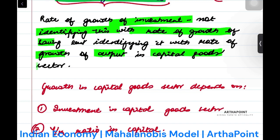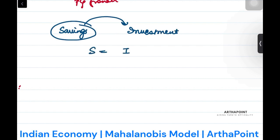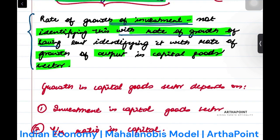Rate of growth of investment: not identifying this with the rate of growth of saving, but identifying it with the rate of growth of output in capital good sector. Mahalanobis did not identify it with the savings. Usually we have savings and these savings translate into investment, S equals I. He didn't focus on that. He was not interested in how savings are working.